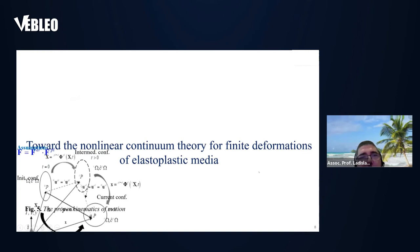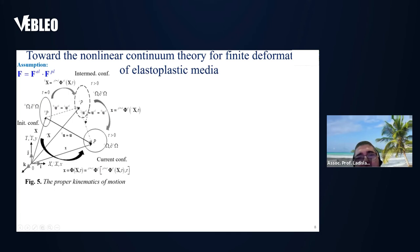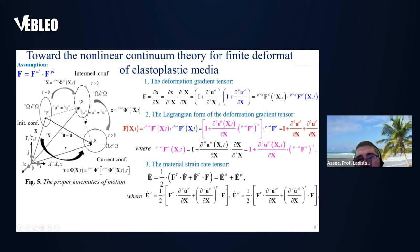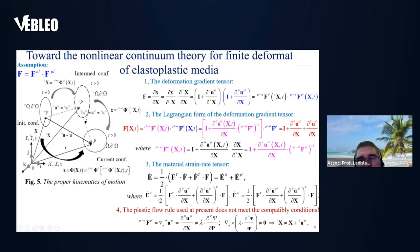Now let's start with the continuum theory development. As I said, the proper Lagrangian form of the deformation gradient is actually based on the additive split of the Lagrangian displacement field into the elastic part and the plastic part. The material strain rate tensor can then be additively divided into the elastic part and the plastic part, from which we can identify the elastic and plastic velocity gradients. Looking at the flow rule, we show what was done incorrectly in our previous version: because the flow rule does not meet the compatibility conditions, the formulation is not correct.